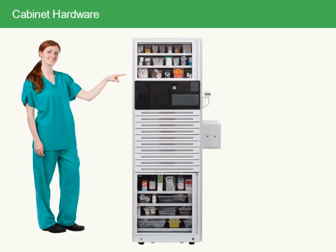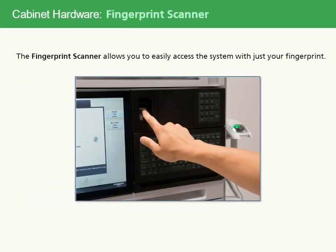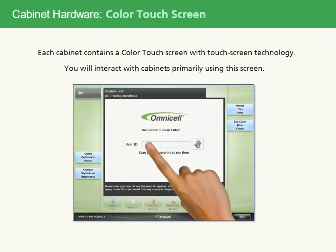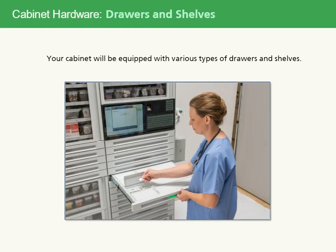Let's have a quick look at the cabinet hardware. The fingerprint scanner allows you to easily access the system with just your fingerprint. Each cabinet contains a colored touchscreen, which you'll interact with primarily. Your cabinet may be configured with various types of shelves, metal locking lid drawers, or open configurable drawers. All drawers and shelves use guiding lights to guide you to the location of your selected item.